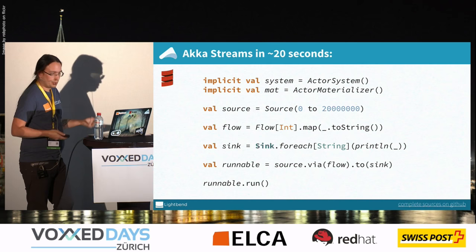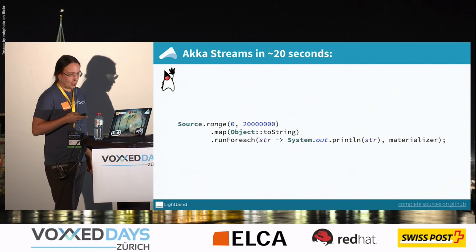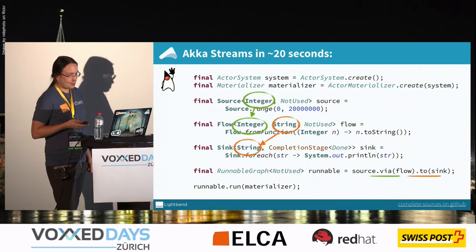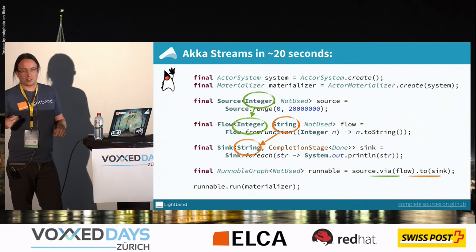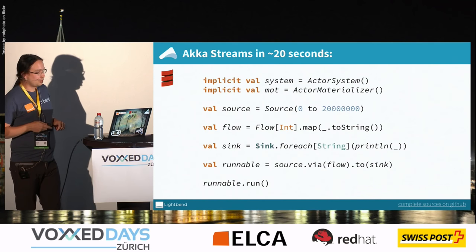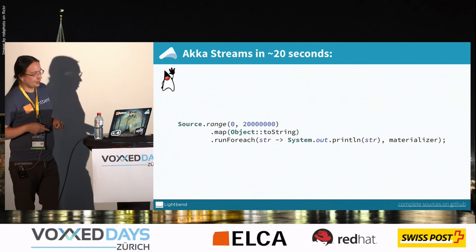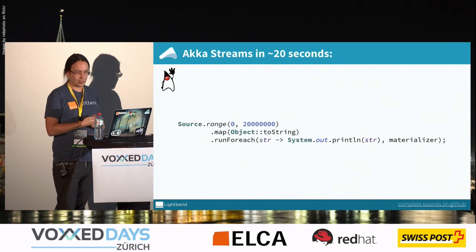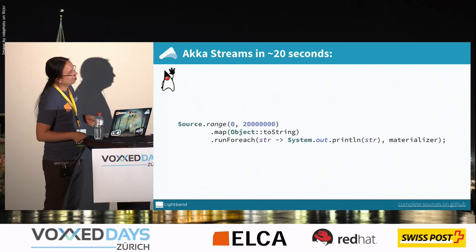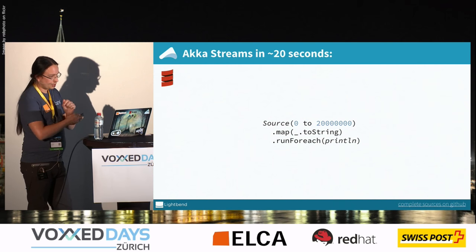In Scala it looks pretty much the same — just a little less verbose with fewer explicit types. In the simple sample it's a lot of code just to take a set of numbers, convert them to strings, and print them. You can also use a more fluent API: from a source you can just map onto a transformation and then call runForEach on it directly. The same thing in Scala is slightly less verbose but not a big difference.